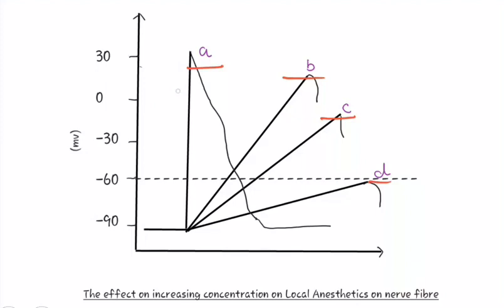A is an untreated nerve fiber and shows normal impulse conduction. B, C, and D are nerve fibers treated with increasing concentrations of local anesthetics. As the concentration of local anesthetic increases, the rise in action potential and maximum depolarization decrease, causing slowed conduction.